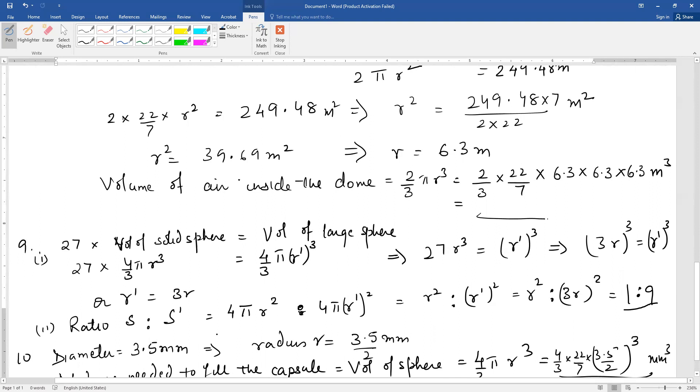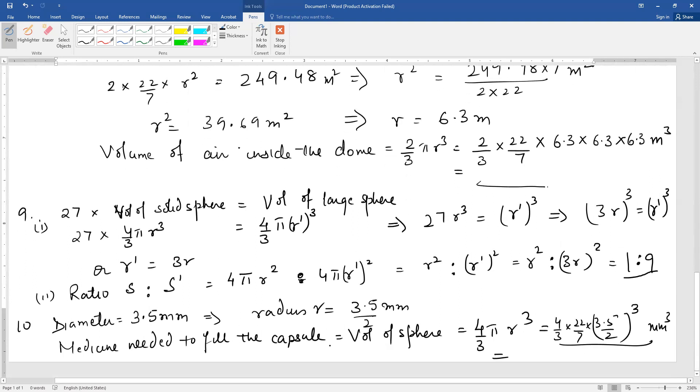Question number 10 is, a capsule which is spherical in shape has diameter 3.5 mm, so radius is 3.5/2. How much medicine is needed to fill the capsule? Medicine needed to fill the capsule is nothing but volume of the sphere, that is 4/3 π r³. Just substitute the r value and get the answer in cubic millimeters. I hope you can do all calculations. Still if you find any difficulty in understanding any concept then you can ask me. Thank you.